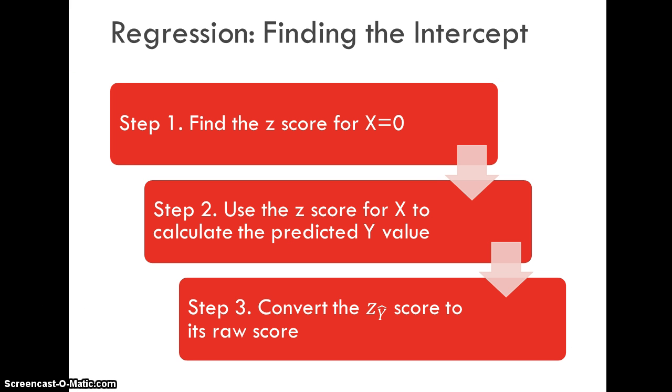So the first thing that we need to do is find the intercept. So remember that when we're dealing with standardized scores, even though that z score equation formula doesn't have an intercept. Well, it does have an intercept. The intercept is 0. But if we're going to convert that to raw scores, then we have to actually find a z score for when x equals 0. So we take our data that we had from the correlation and we find the standard deviation and the mean for x. And then we convert that into a z score. And use that z score in the standardized regression equation to find that predicted z score for y. And then take that z score for y and convert it to a raw score. And that will give us the intercept. So here's how it goes.